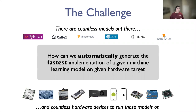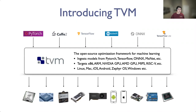The core challenge is that we'd like to automatically generate the fastest implementations — and I want to emphasize automatically. How can we remove the human from the loop to provide a solution for countless models specified and trained by different frameworks, and run them on this Cambrian explosion of new hardware devices? This is a really great opportunity for folks working on compilers to seize — it's a unique set of conditions that dictate innovation in our field.